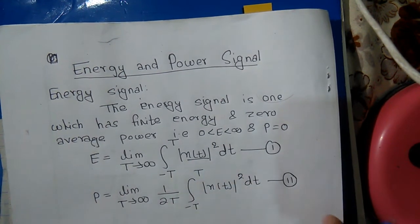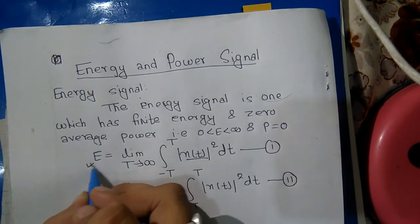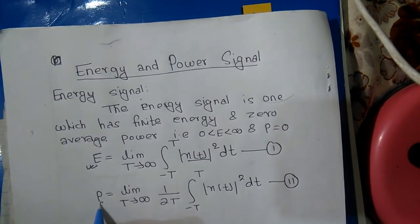x(t) is a signal, any signal it can be. Its energy is given by this equation, and for average power, this is average power.